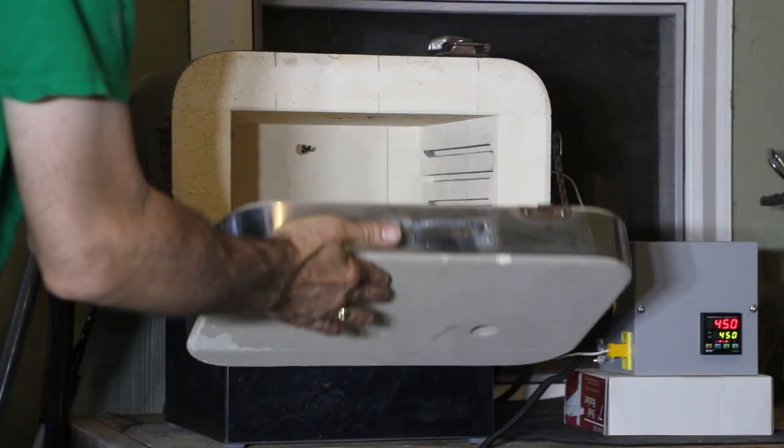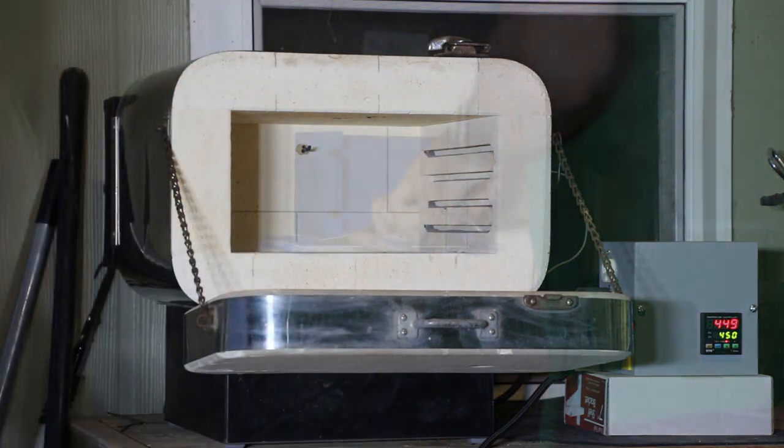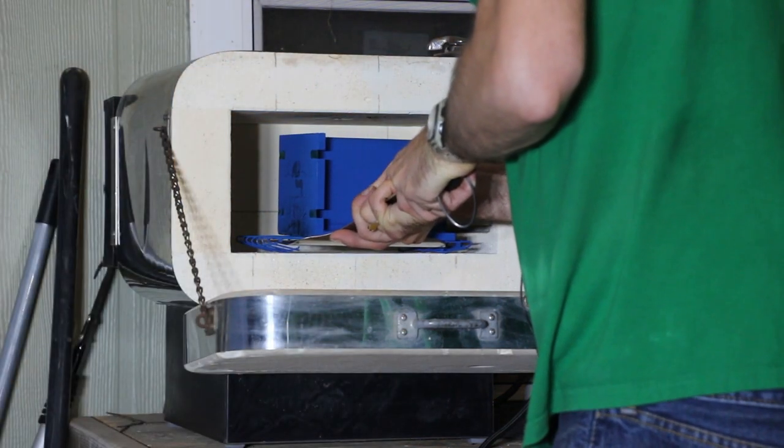So I have my oven preheated to 450 degrees Fahrenheit—that's about 230 Celsius—so I'm ready to put it in.